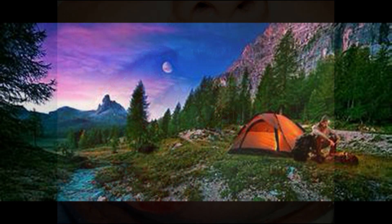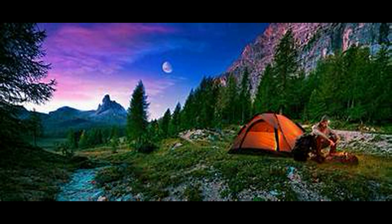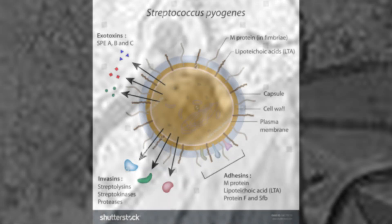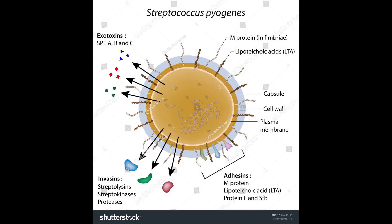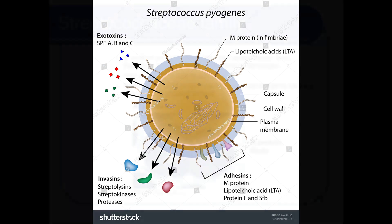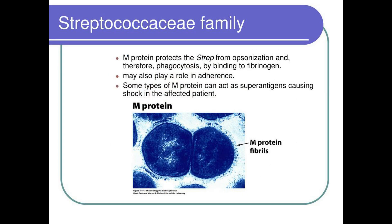Once the pathogen reaches its destination, it is time to set up camp. Once the pathogen reaches its destination, it can adhere to host cells using the LTA, or lipoteichoic acid, on its capsule. It can then enter the host with the help of the M1 protein on its capsule. The M1 protein helps promote its entrance through the tissues and into the cell, and is considered its primary invasive factor.